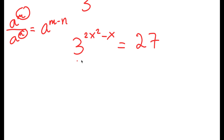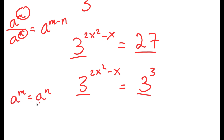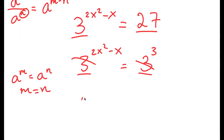To solve an equation like this, we want the bases of both terms to be the same. Currently I have a base of 3 and a base of 27, which aren't the same. However, I can rewrite 27 as 3 to the power of 3. Now both bases are the same. Using the property that if a to the power of m equals a to the power of n, then m equals n, I can cancel the bases and I'm left with 2x squared minus x is equal to 3.